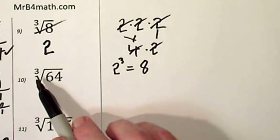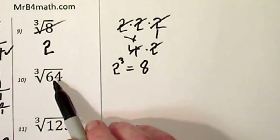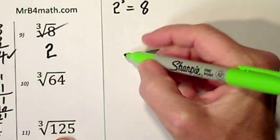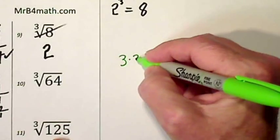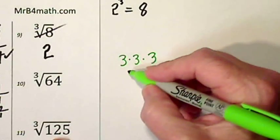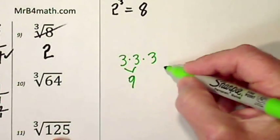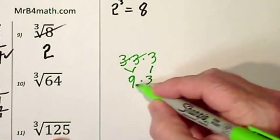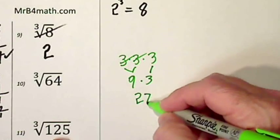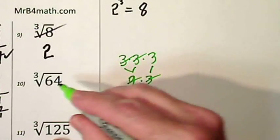The cube root of 64. We'll try 3 times 3 times 3. 3 times 3 is 9. Bring that down. 3 times 9 is 27. That's not what we seek.